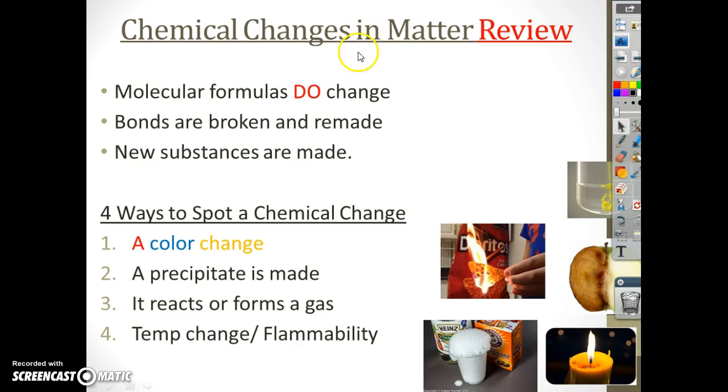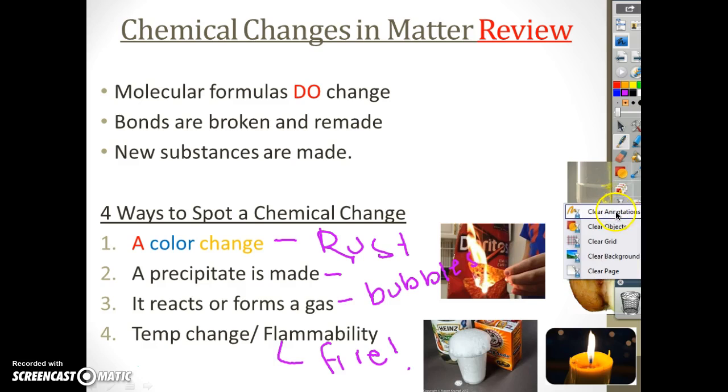Chemical changes in matter are written as chemical equations. Here's the four ways we can spot them: a color change, a precipitate is made, it forms a gas, that's when you see bubbles, and lastly a temperature change. It catches on fire? Definitely chemical.